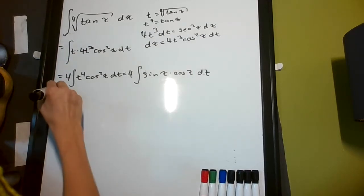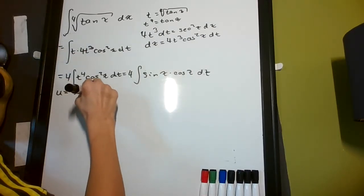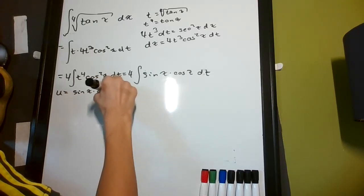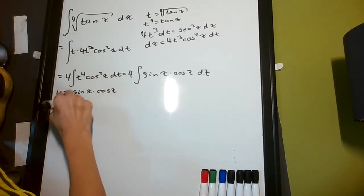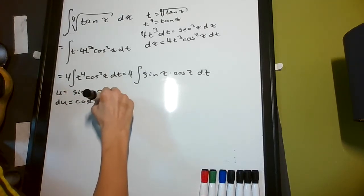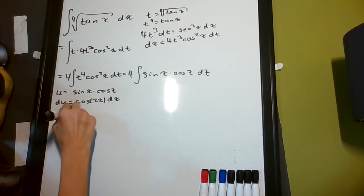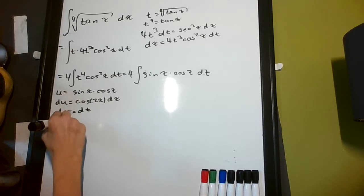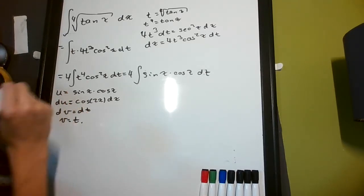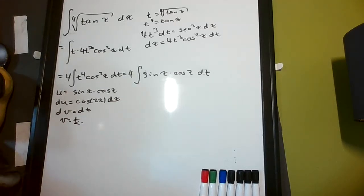So, what I'm first going to do is, I'm going to let u equal sine of x times cosine x, so that du, if you run through it, you get cosine 2x dx. Now, I'm going to let dv equal to dt, so that v is equal to t, right? Right here, we have a dx, right here, we have a t, and we know what t is.